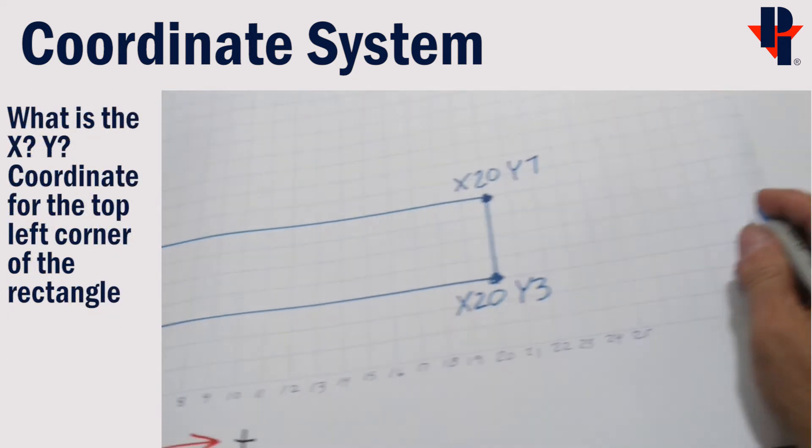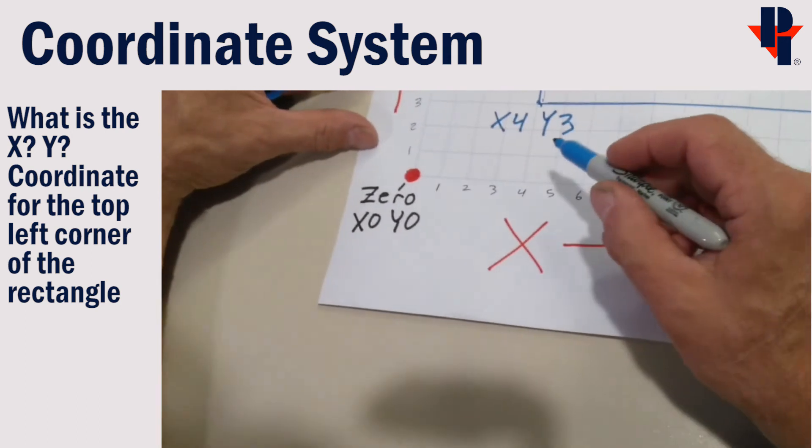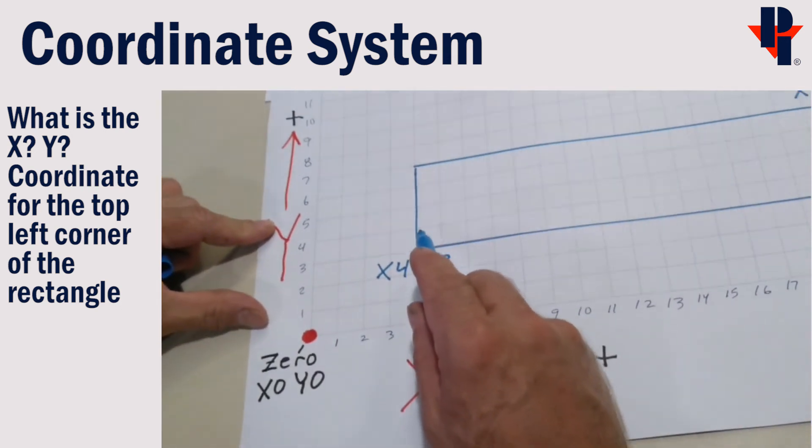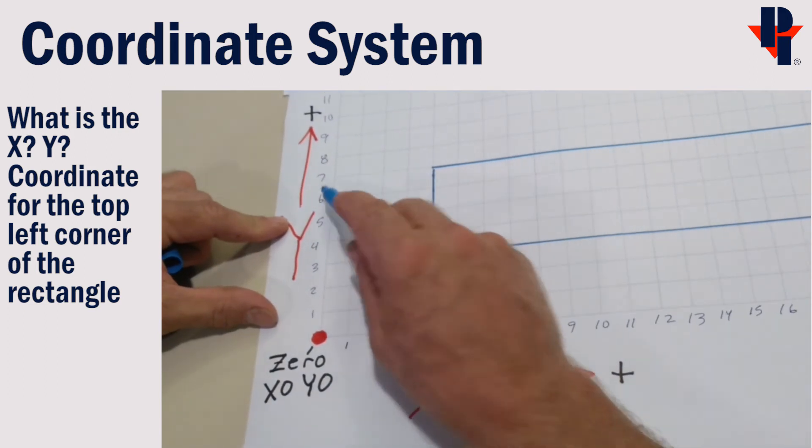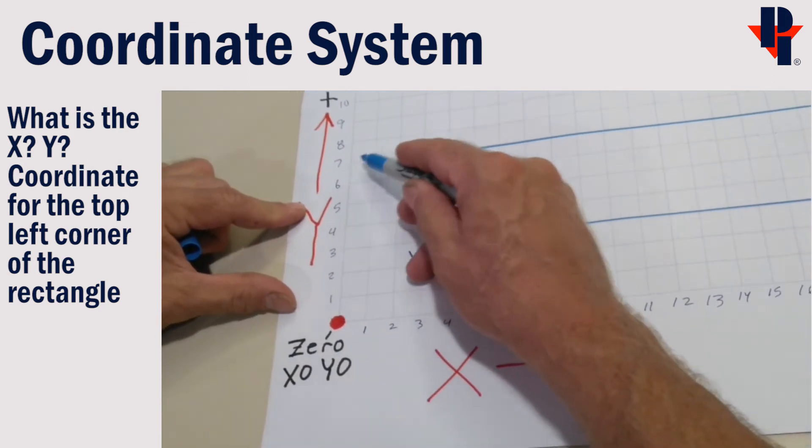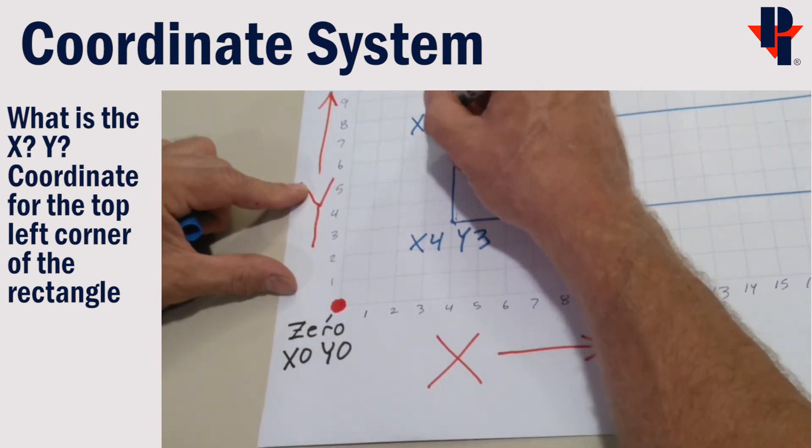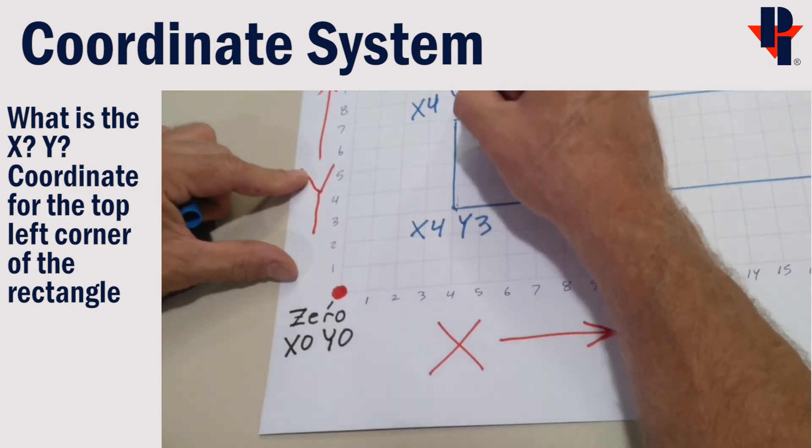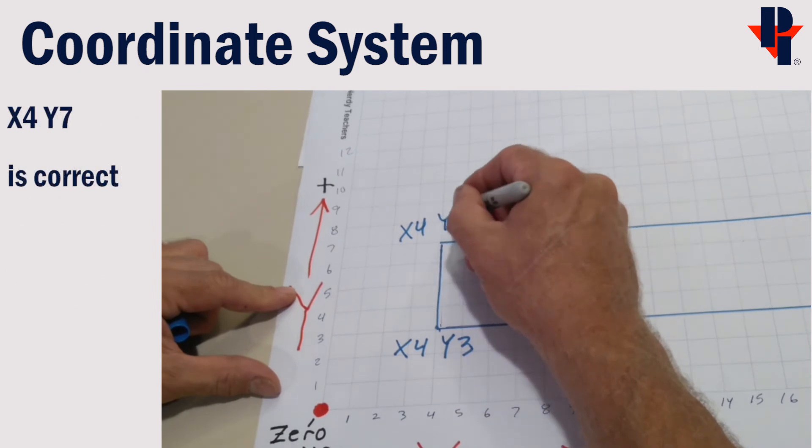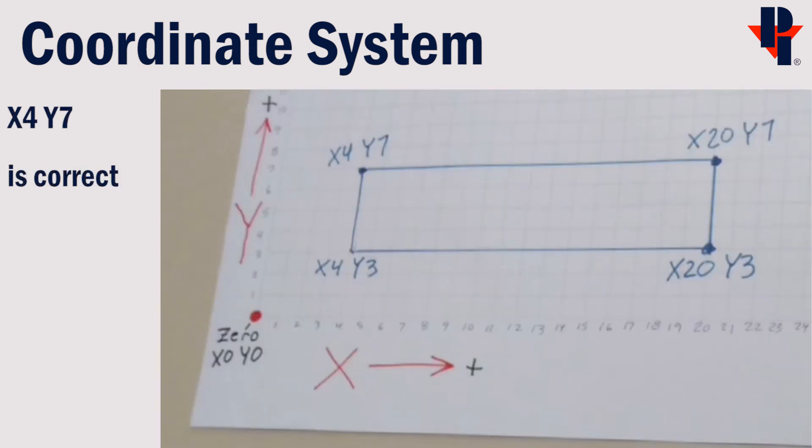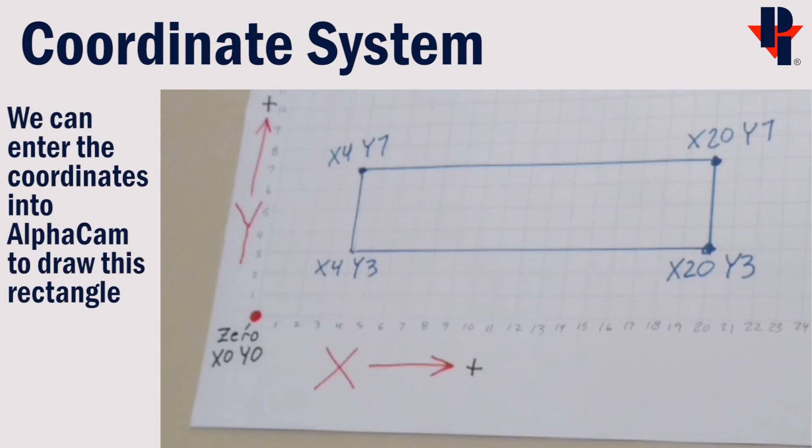So what would the x and y coordinates be for the top left corner of our rectangle? x4, y7 would be the correct answer. These coordinates can now be used in our CAD system to create a digital drawing.